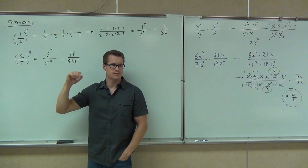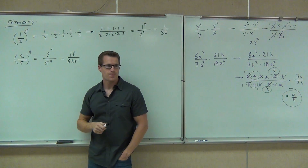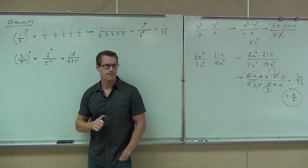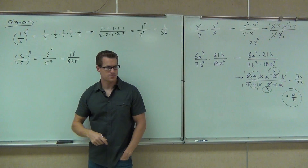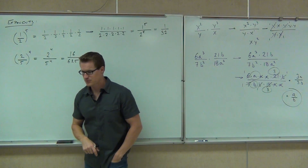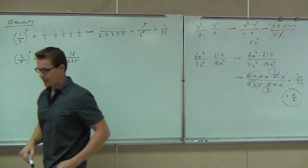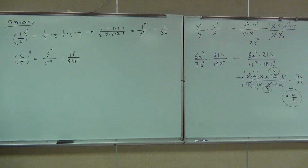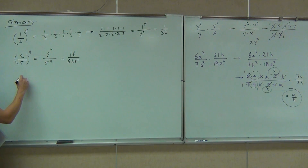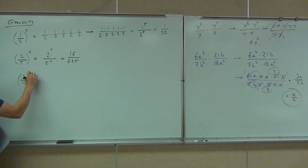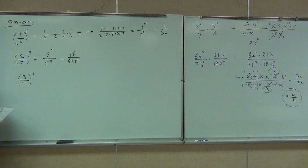So if you get a question that says something like four-tenths to the fourth power, simplify it first — simplify the fraction first before applying the exponent. Why don't you try this one? Let's do three-fourths to the third, and then we'll look at what it means to have negative four-fifths to the second.